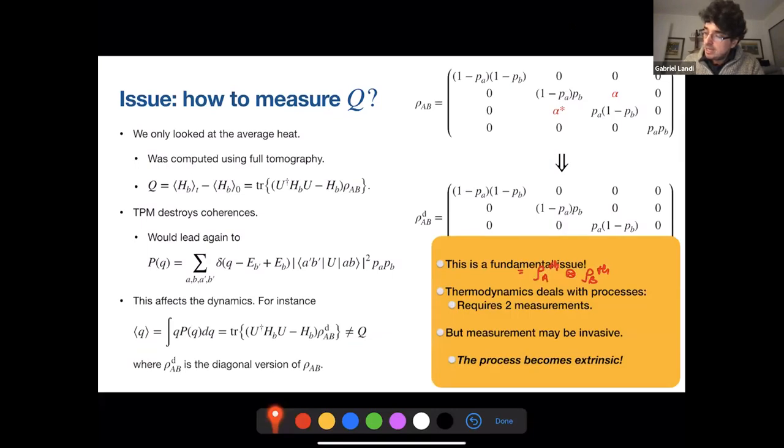So this is what I mean by the process being extrinsic, the very act of trying to determine the heat, we actually influenced it in an irreversible way, and therefore, the value of the heat that we obtain is different as if we didn't measure it. So this is a fundamental issue, and I think it's a very interesting issue. It is an interplay between measurement back action in quantum physics and the fact that thermodynamics always deals with processes. So quantities in thermodynamics depend on at least two measurements or two instances of time, and then the measurements are invasive. So that's what I mean by extrinsic.